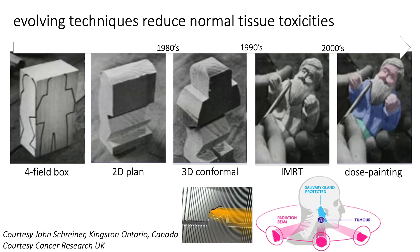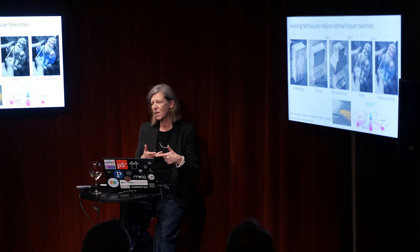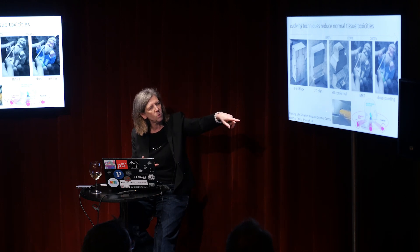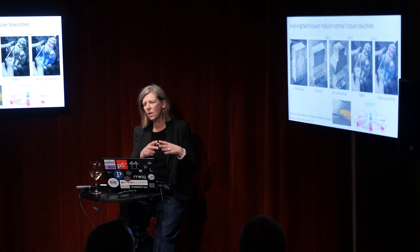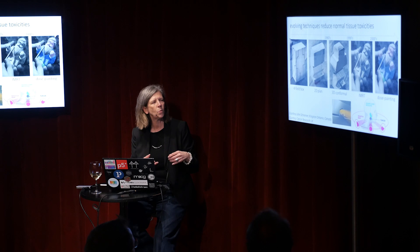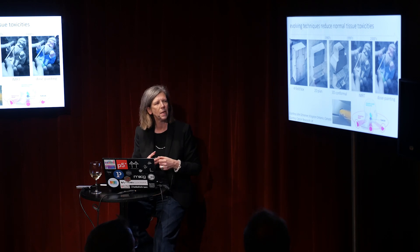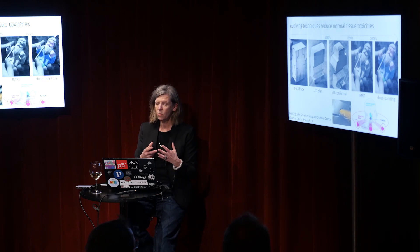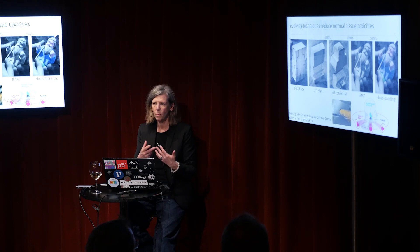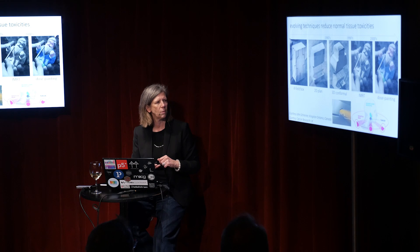For IMRT, what you see is a multi-leaf collimator. In the 2D era, shaping was very manual; now it's all done automatically, driven by electronics and computers. We can only do this because we have stronger computers, better machines, and better imaging. You use different angles, shape the beam towards the tumor, and avoid everything around it. An even further step is dose painting — giving different doses within the tumor based on imaging indications of where the tumor might be more resistant — though this is still very much research-driven.